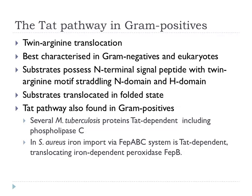The TAT pathway, mentioned in gram-negatives, is present in gram-positives as well. There's an N-terminal signal peptide with the twin-arginine motif, N-domain, and H-domain, and substrates go through in a folded state. In M. tuberculosis, several TAT-dependent proteins have been described, including phospholipase C which may be involved in virulence. In Staph aureus, an iron import system called FEP-ABC is TAT-dependent, translocating the peroxidase FepB through TAT.